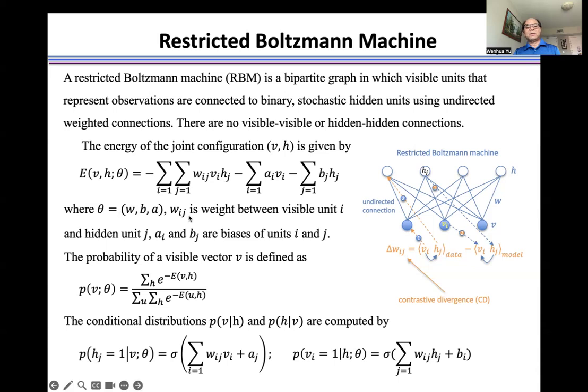Where theta is the model parameters, w_ij is the weight between visible unit i and hidden unit j, and a_i and b_j are biases of units i and j.